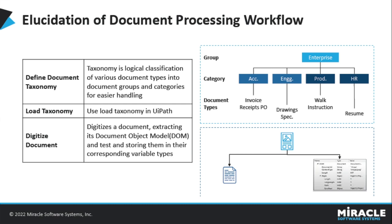Once the taxonomy has been loaded, the next step is to digitize the document. Most documents we receive could be in PDF format, image format, or any other format. In order to make them readable by the machine, we need to convert them to a digital format using the Digitize Document activity. As input you provide the file path, and as output you get the text along with the DOM — the Document Object Model — which specifies the kind of document passed and the number of pages it contains.